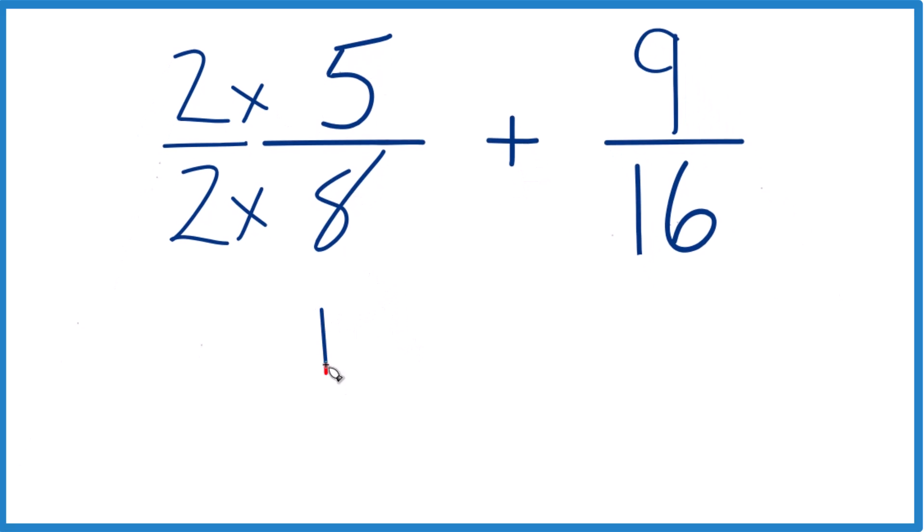2 times 5 is 10. 2 times 8, that's 16. And 10 sixteenths, that's an equivalent fraction to 5 eighths. They have the same value.